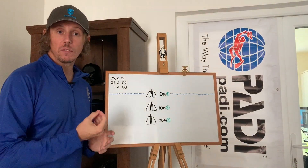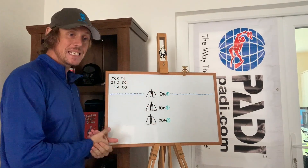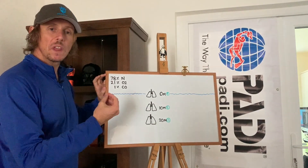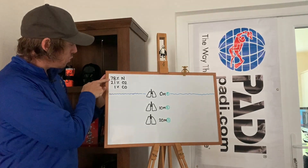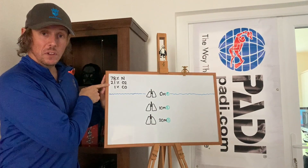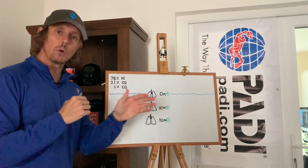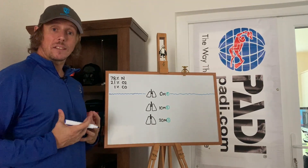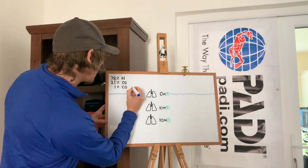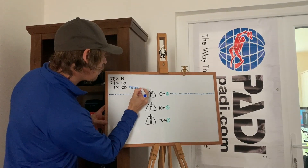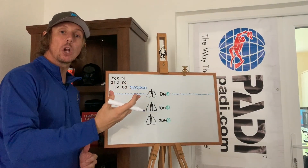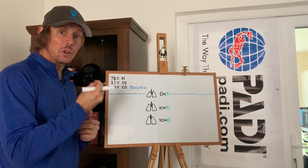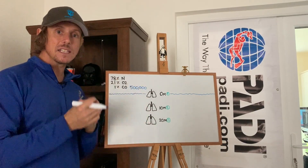We'll wrap things up here by talking about the physiological effect that carbon monoxide will have at depth. In this example, I've picked an arbitrary gas — we're just going to use air — but the air has a slight contamination of carbon monoxide in it. We'll assume it's 78% nitrogen, 21% oxygen, and only 1% carbon monoxide. If we inhale this gas, let's assume that it has 500,000 molecules of carbon monoxide with every breath.